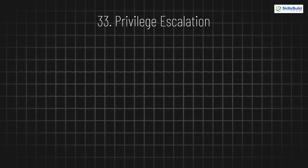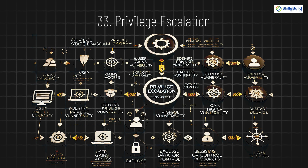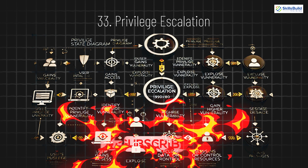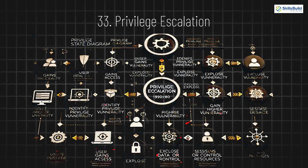33. Privilege Escalation. Privilege escalation occurs when hackers gain unauthorized access to higher levels of a system's privileges, allowing them to control more resources, install software, or access sensitive data.